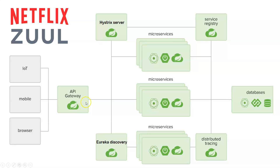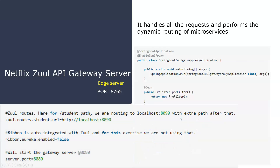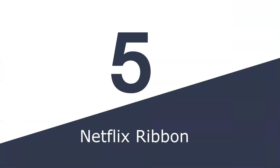The API gateway handles dynamic routing of microservices and has a built-in load balancer for all incoming requests. To use Netflix Zuul, you need the @EnableZuulProxy annotation and its dependency. The default port for Zuul API Gateway is 8765. You configure it in your application.properties file and must also configure each microservice or client to route access through the API gateway.